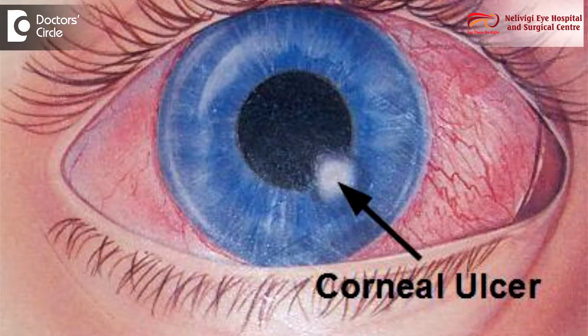Improper use of contact lenses can cause a condition called corneal ulcer. Corneal ulcer is a situation where one part of the cornea — the outer portion of the eye — gets a defect or ulcer. An ulcer is a discontinuity in the upper surface, and when this happens, that area is prone to infections.